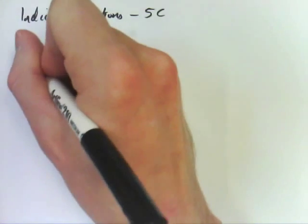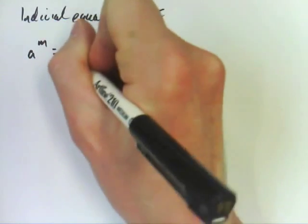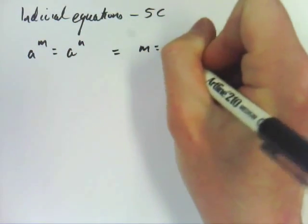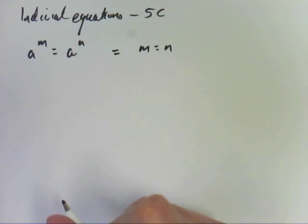Alright, indicial equations. A couple of things you need to know. If a to the m is equal to a to the n, then of course m equals n. Rocket science, yeah? That's easier. If I do math, it would be that easy. Rocket science.